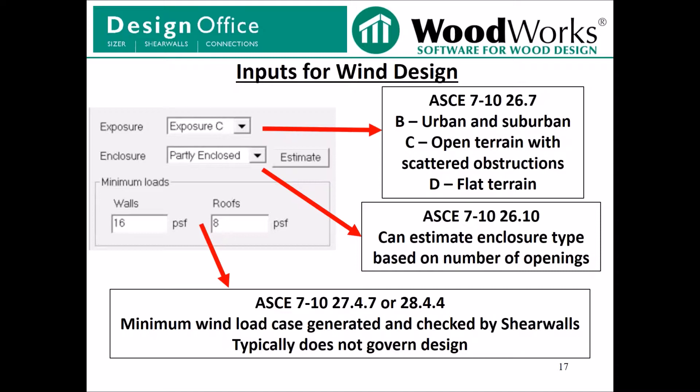Below that are the inputs for the minimum wind loads. Shearwalls uses the minimum loads specified in ASCE 7-10, but you have the option of changing the minimum load case depending on the location or specific criteria from the building department. Typically, loads generated with the basic wind speed do not govern the design.